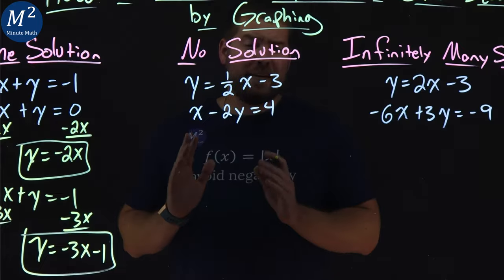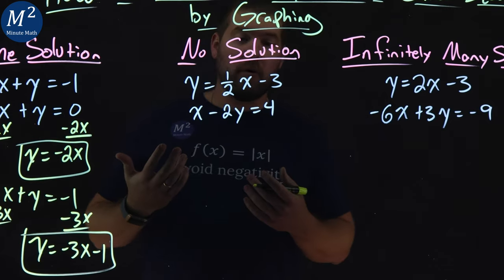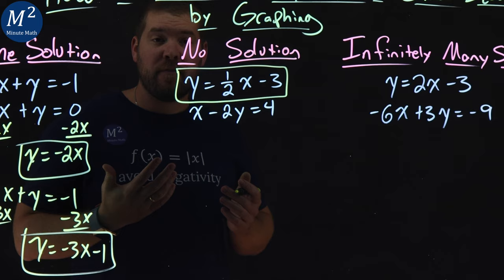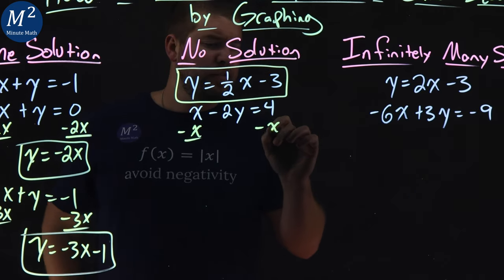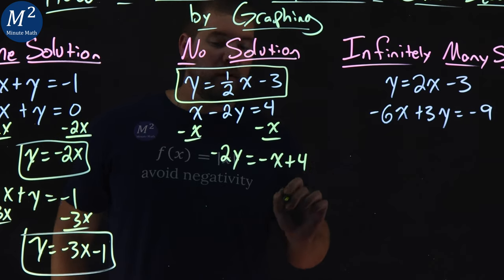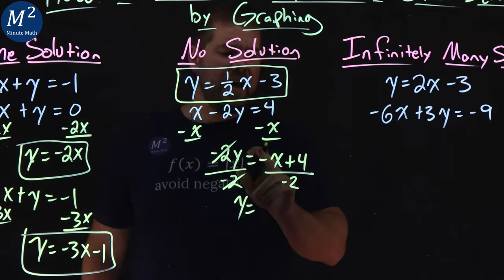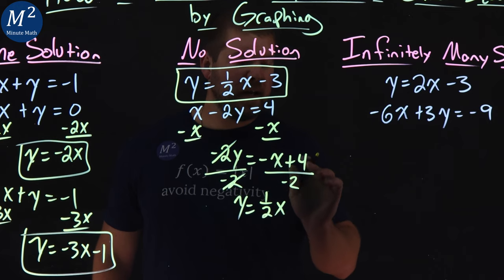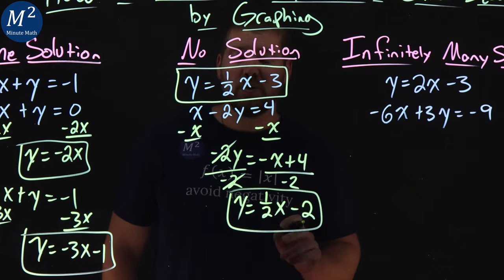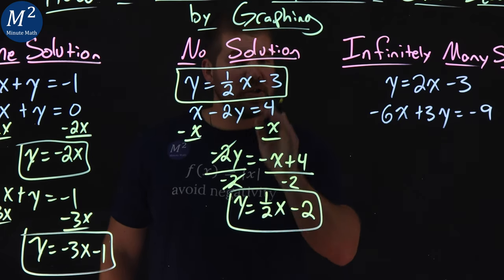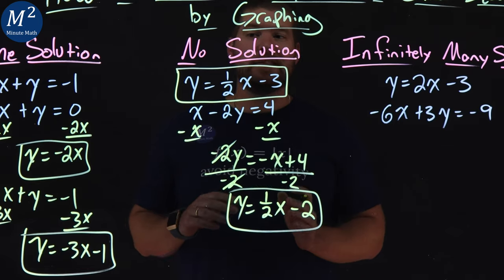Now for the second problem, which will have no solution. We still need to write this in y equals mx plus b form. The first equation is already in that form: y equals 1 half x minus 3. For the second equation, I subtract x from both sides, leaving negative 2y equals negative x plus 4. Dividing both sides by negative 2, I get y equals 1 half x minus 2. Notice the slopes are the same — one half — but the y-intercepts are different: negative 3 and negative 2. That's going to be important for understanding why we have no solution.